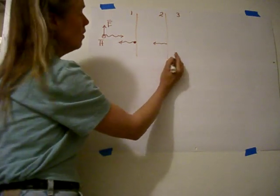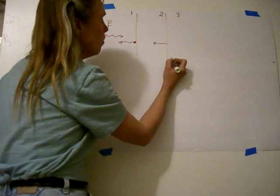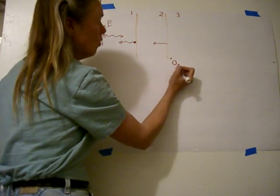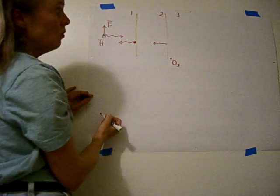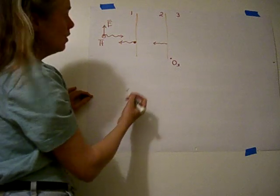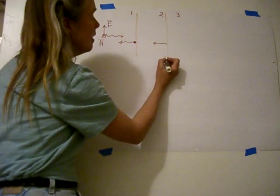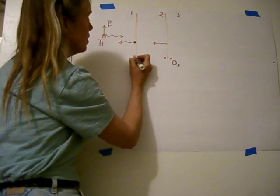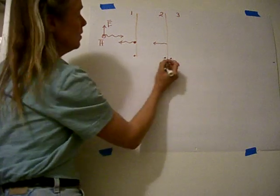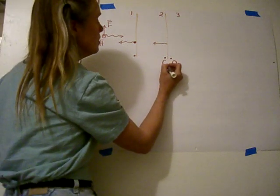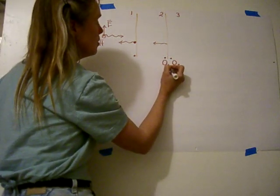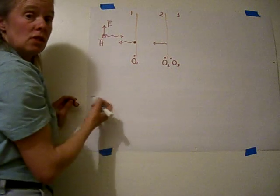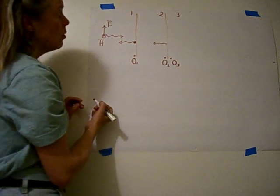We're going to start with a load. We're going to first place an origin — we'll call it origin three — right here on the left-hand side of this load. Then we're going to put all of the other origins on the right-hand side of the region. So this is origin number two, and this is origin number one. Those just give us some reference points.